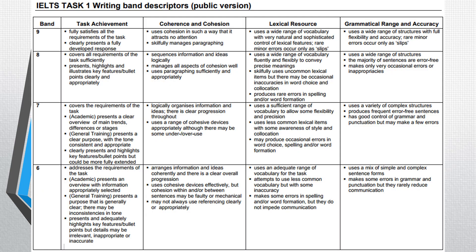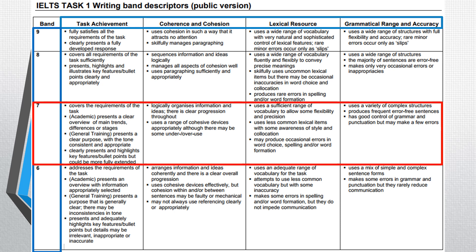In front of you now you have the IELTS writing task 1 band descriptors, which are slightly different to the essay writing task. In the table here, as you can see, we have the different band descriptors along the top: task achievement, coherence and cohesion, lexical resource, and grammatical range and accuracy. Down the side we have the different bands you can get, right at the top a 9, 8, down to a 7, 6, and lower — but obviously we are aiming for much higher than that. I'm going to be targeting a band 7 or higher.